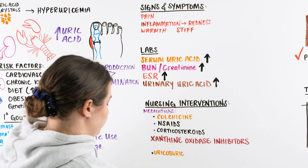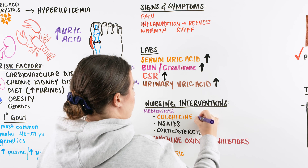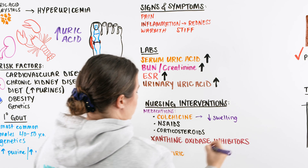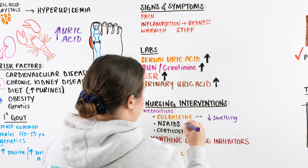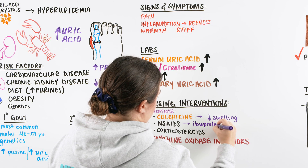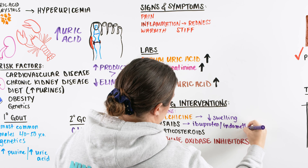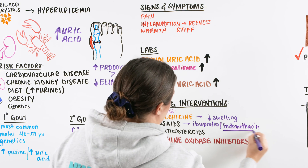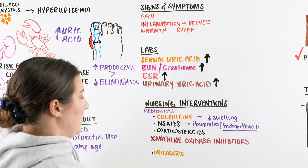One medication a patient can receive is colchicine, which helps decrease swelling within the joint and inflammation. Along with colchicine, we use NSAIDs — like ibuprofen or indomethacin, which is one specifically used for gout. These also help with inflammation, pain, and redness.